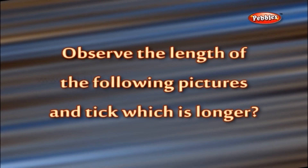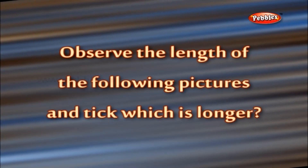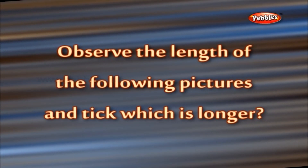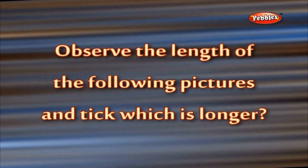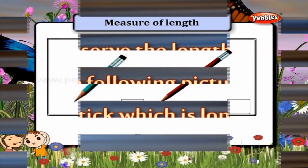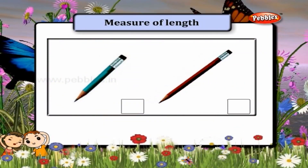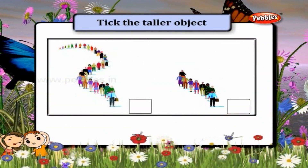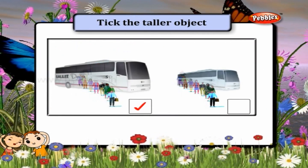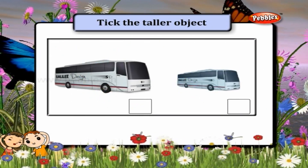Observe the length of the following pictures and tick which is longer. This pencil is long. This queue is long. This bus is long.